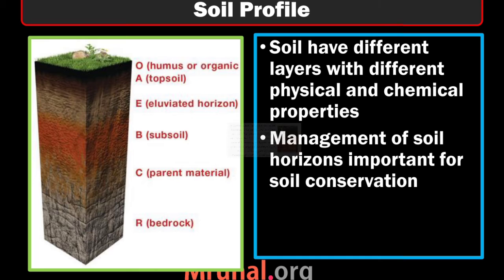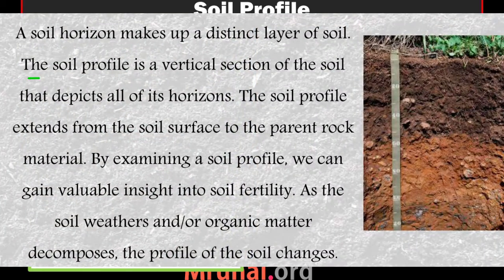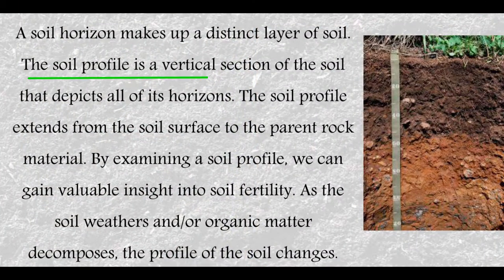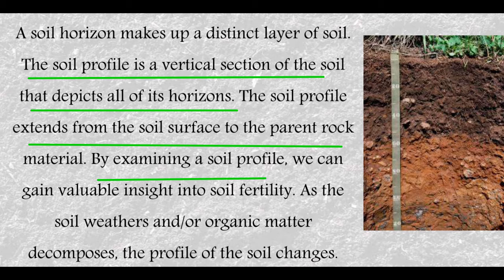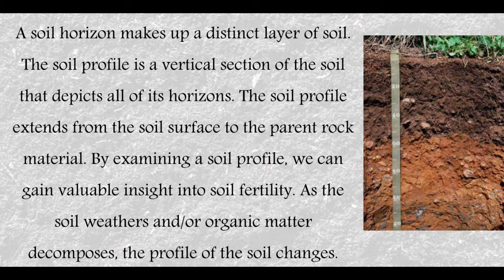Soil is made of different physical and chemical layers. The soil profile is a vertical section of soil that depicts all its horizons. The soil profile extends from the soil surface to the parent rock material. By examining a soil profile, we can gain valuable insights into soil fertility. As soil weathers and organic matter decomposes, the profile of soil changes. The vertical section is divided into different layers called horizons.